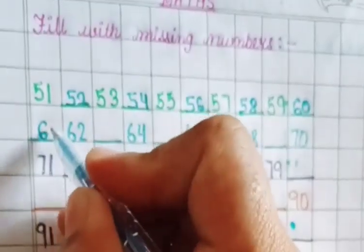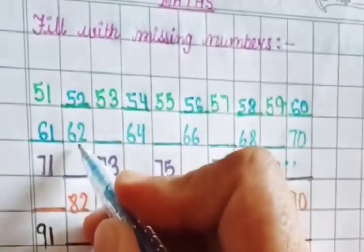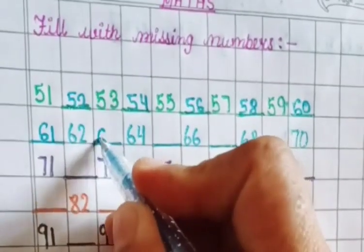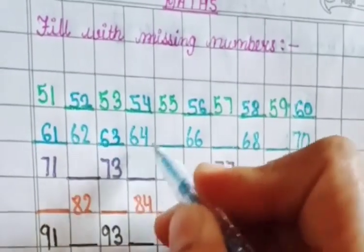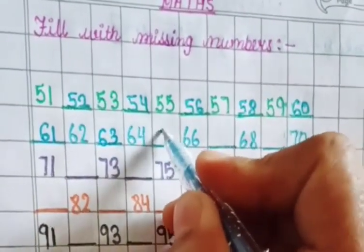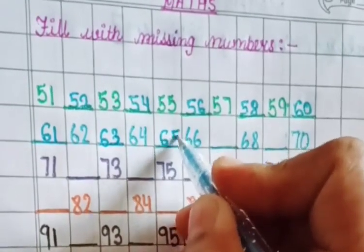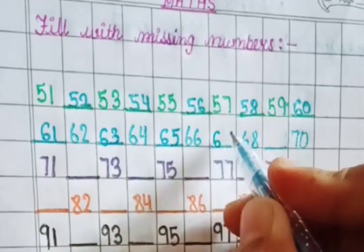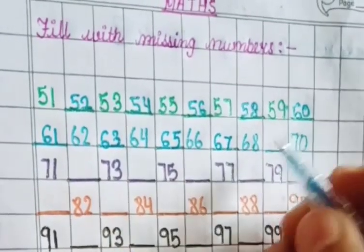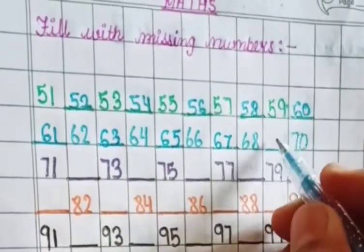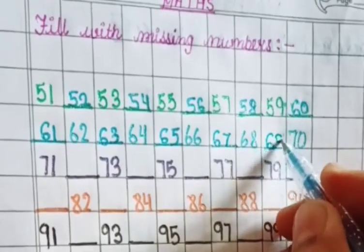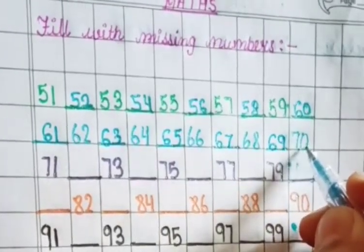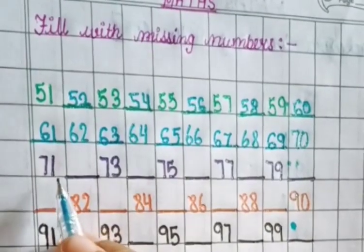60. Now 61, 62, 63, 64, 65, 66, 67, 68, 69. 7, 0, 70.